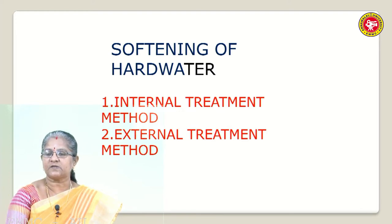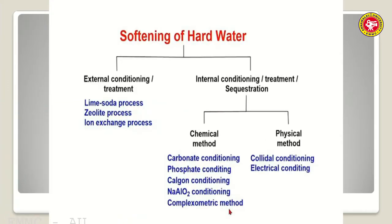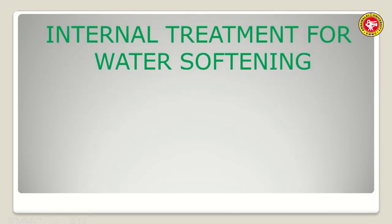This process is called softening of hard water. There are two types of softening treatments: internal treatment and external treatment. External treatment includes the lime-soda process, zeolite process, and ion exchange - in our syllabus we have only the ion exchange process. Internal conditioning treatment includes chemical methods (carbonate conditioning, phosphate conditioning, Calgon conditioning, sodium aluminate conditioning, and complexometric method) and physical methods (colloidal conditioning and electrical conditioning).